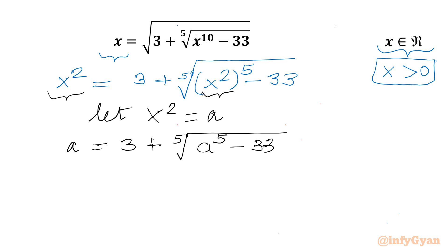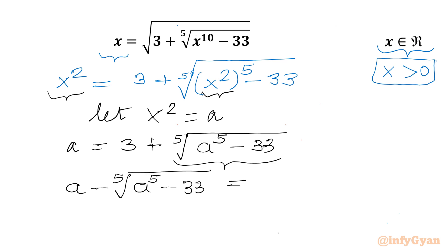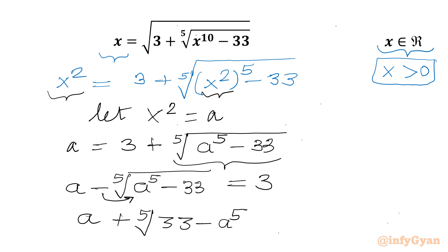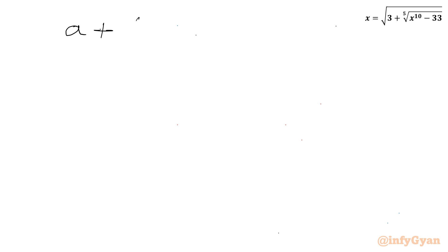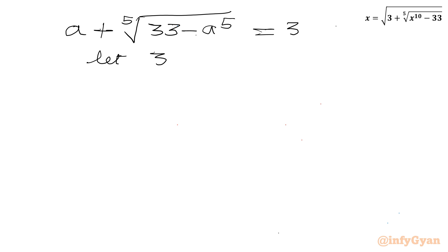Now I will move the radical term to the left hand side: a minus fifth root of (a to the power 5 minus 33) equals 3. Taking the minus sign inside the radical gives a plus fifth root of (33 minus a to the power 5) equals 3.